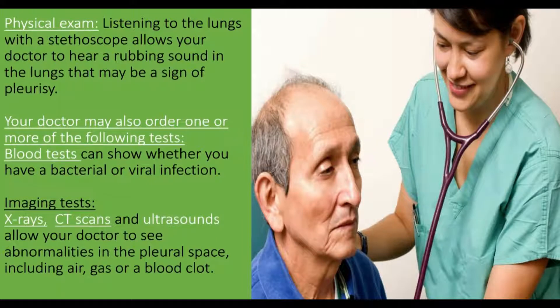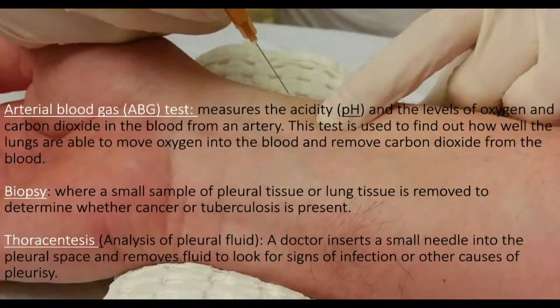A doctor may also order one or more of the following tests. Blood tests can show whether you have a bacterial or viral infection or an immune system disorder. Imaging tests such as X-rays, CT scans, and ultrasounds allow the doctor to see abnormalities in the pleural space, including air, gas, or a blood clot.